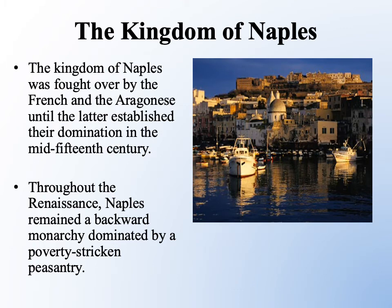The Kingdom of Naples was often fought over between some of the larger, more important dynasties in Europe — particularly the French and the Aragonese based in Spain — with the Aragonese eventually becoming dominant there by the mid-15th century. Naples was never really a very active player in the Renaissance culturally, usually seen as being kind of backwards, mostly dominated by poverty-stricken peasants. There was not much development in terms of trade and commerce, meaning not a lot of wealth being produced, and therefore no disposable income to patronize Renaissance art.